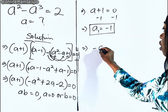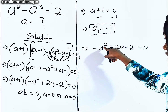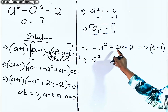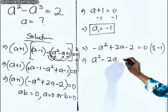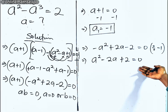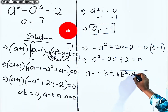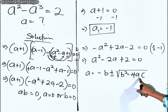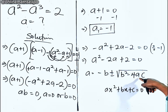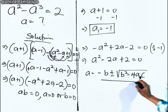Now for the second one, we have negative A squared plus 2A minus 2 is equal to 0. We don't want to work with this negative on A squared, so we are going to divide each of these terms by negative 1. If you do that: divide this, you have positive A squared; divide this, you have negative 2A; divide this, you have positive 2; divide, you have 0. This has led us to a quadratic equation because the highest power of A is 2.